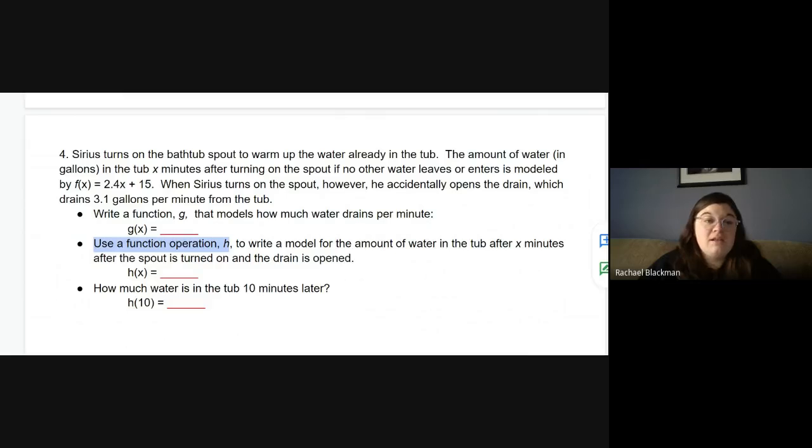If you made this a negative 3.1x with your function G(x) to show that it's draining, well, you're already making it negative 3.1. So we're already draining the thing. You just do 2.4x plus 15 plus negative 3.1x. Or if you made it a positive 3.1x, well, then you just need to subtract the two functions. So think about that. You've got a good start on it.